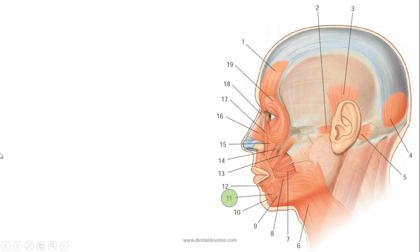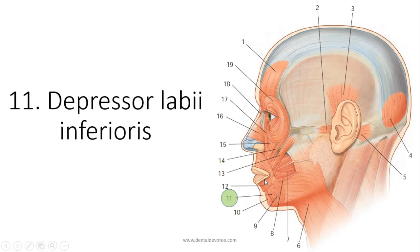Another one we have, let's see what it does first and then we can easily name it. It is attached to the lower lip, it depresses the lower lip. Hence its name is depressor labii inferioris. Labial means related to lip, depressor labii inferioris.